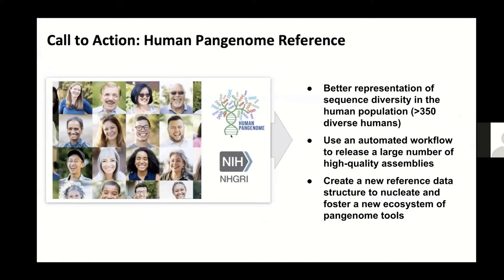Therefore, there was a call to action, and this was the launch of the Human Pan-Genome Reference Consortium. The goal is to provide a better representation of sequence diversity in the human population. We're targeting at least 350 diverse humans, and when you think about phased haplotypes, we're thinking along the lines of 700 phased haplotypes. This builds on the idea of using automated workflows to release a large number of high-quality assemblies and creating a new reference data structure to foster a new ecosystem of pan-genome tools.